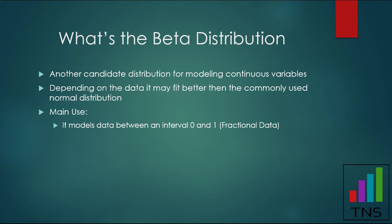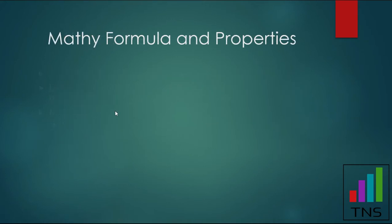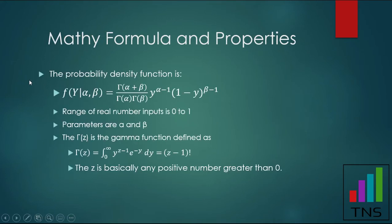The main use — and this is where it gets interesting — is that the beta distribution has been widely used to model data where the continuous variable is between zero and one. We call that fractional data. The name should make some sense: fractional data is really fractions, numbers between zero and one.